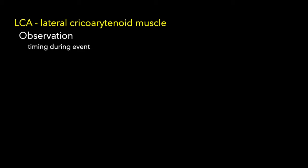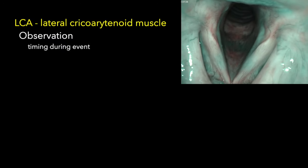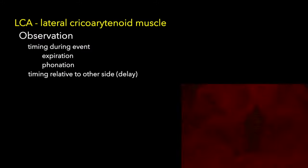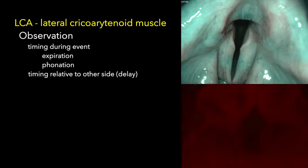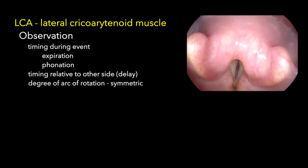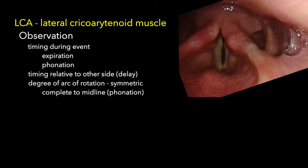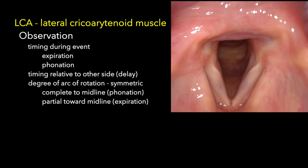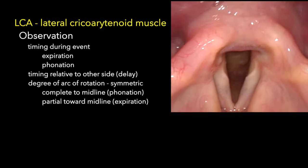So what you're trying to observe is timing during an event: does the vocal process rotate and move medially during expiration and during phonation? And you can evaluate that timing relative to the other side - look at left and then right and see if there's a delay between one side and the other. You can also look at the arc of rotation toward the midline, and that should, in general, be symmetric - both during phonation and during expiration - symmetric and partial closure, depending on the degree of positive end-expiratory pressure that you need.